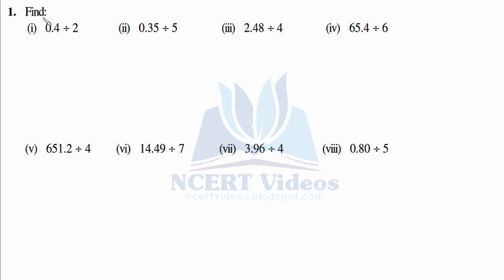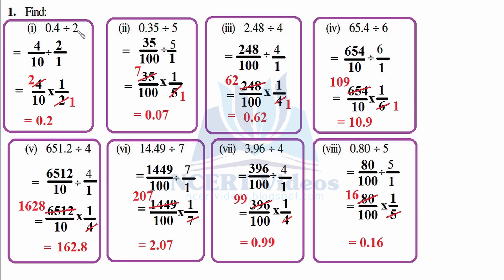First find 0.4 divided by 2, 0.35 divided by 5, 2.48 divided by 4, 65.4 divided by 6, and similarly the rest of the questions. For 0.4 divided by 2, write 4 as it is, represent the decimal with 1 and then number of digits after decimal towards the right hand side by zeros, then divide as it is: 2 by 1.